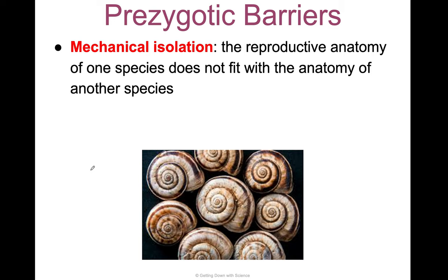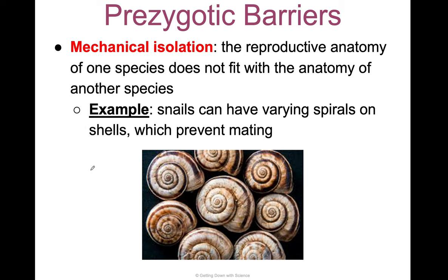Mechanical isolation is when the reproductive anatomy of one species does not fit with the anatomy of another species — your parts don't fit together. For example, snails have varying spirals on their shells which prevent mating from happening — only the right bits can fit into the right bits. That is mechanical isolation.